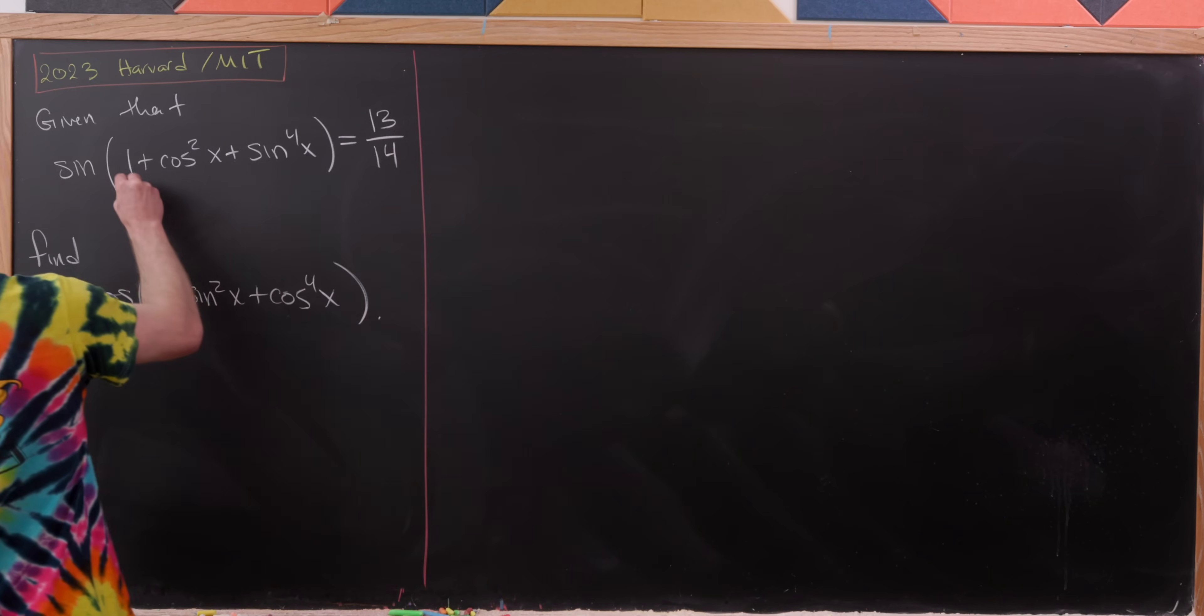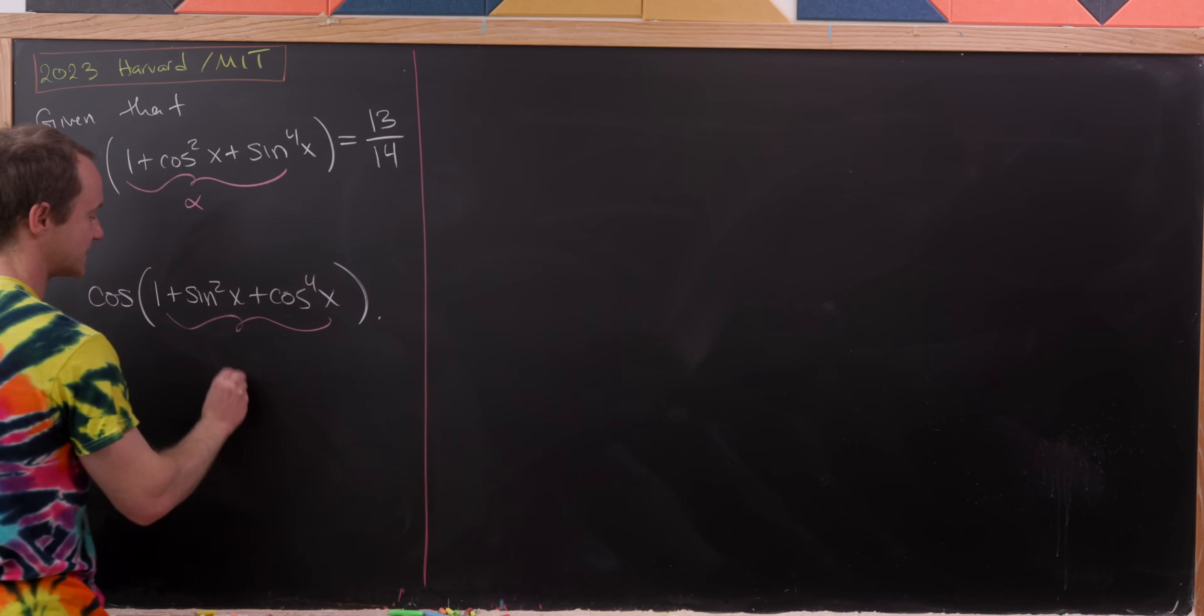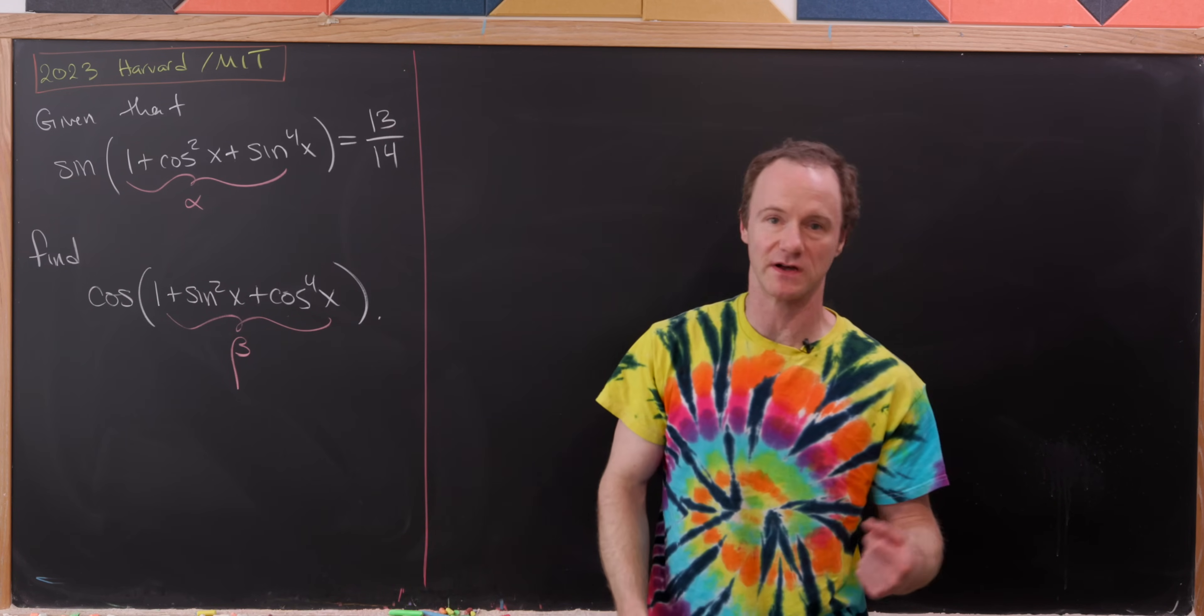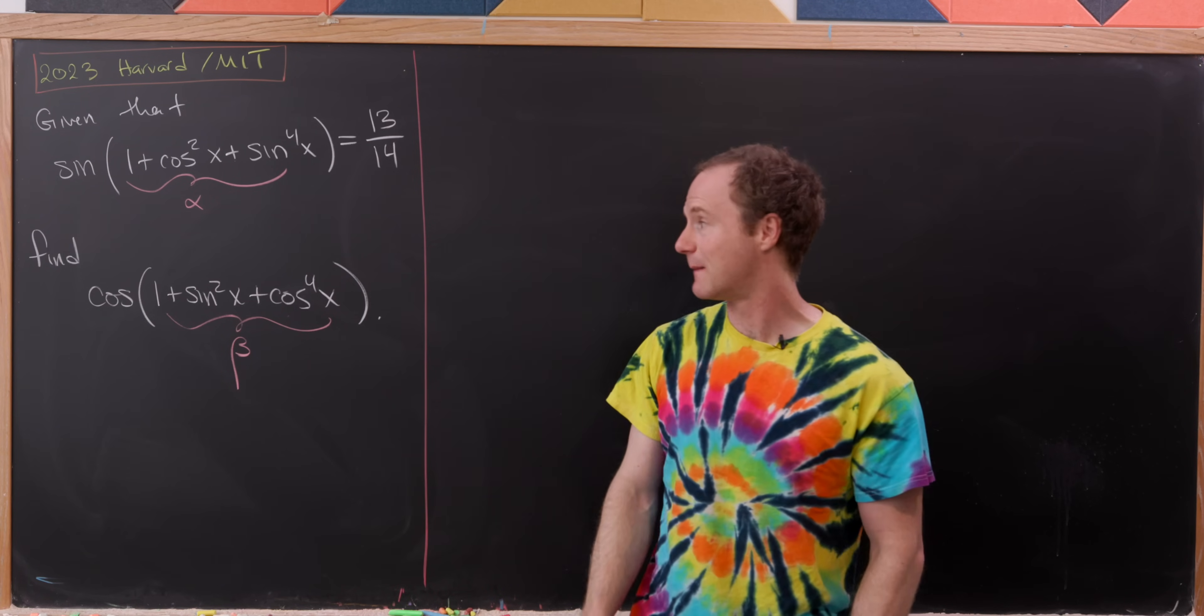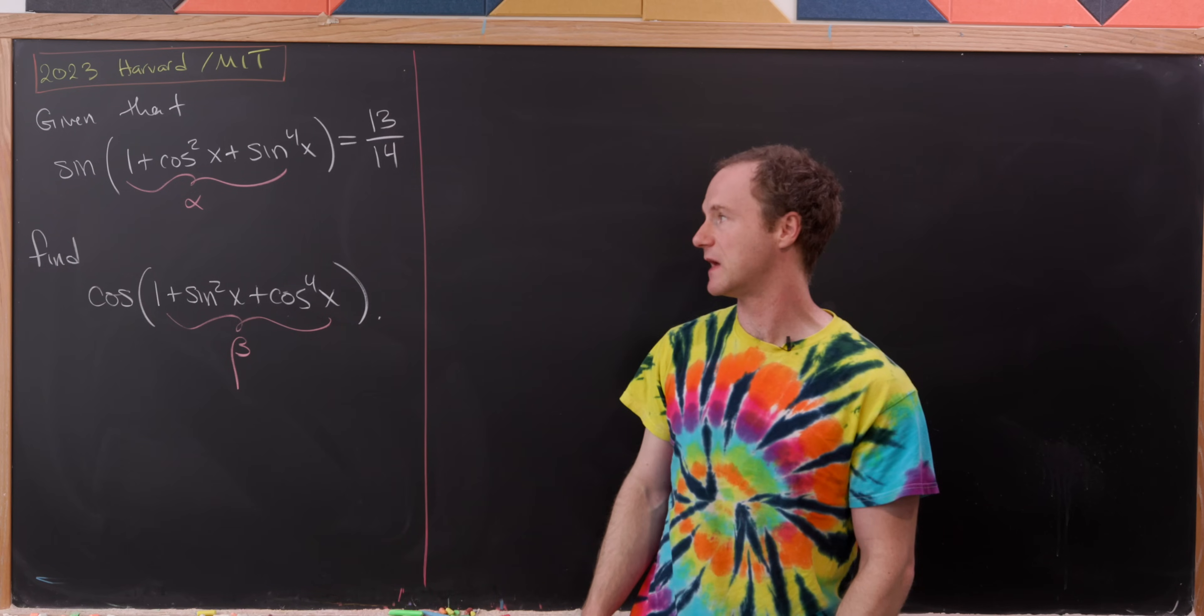I'm going to start by giving these some names for notational convenience. Let's say that top one is equal to alpha, so sin(α) = 13/14. And let's say that bottom one is beta. So our goal is to find cos(β).